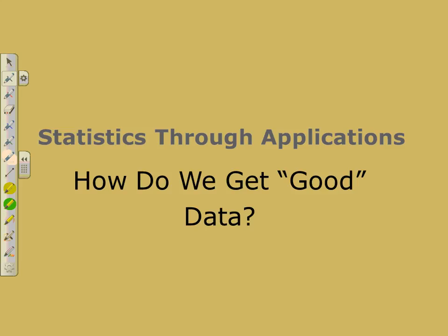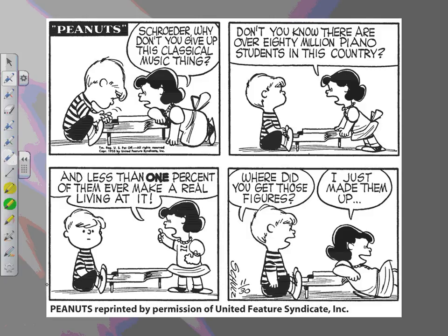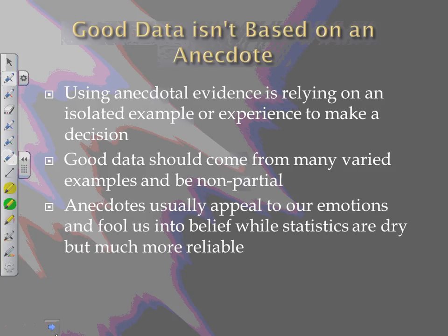All right, we're done with our quiz. Our notebooks are out. We're ready to take some notes. The next lesson is how do we get good data? Here's a little cartoon where Lucy is talking to Schroeder. Lucy says, do you know there are over 80 million piano students in this country? And less than 1% of them ever make a real living at it. Schroeder's like, where did you get those figures? Lucy said, I just made them up. So not very great data coming out of Lucy. First thing to know is that good data is not based on anecdotes. You are not going to be using anecdotal evidence when you're getting good data. It's going to come from many sources, many examples, and it should be non-biased. Don't fall into the trap of using anecdotes.